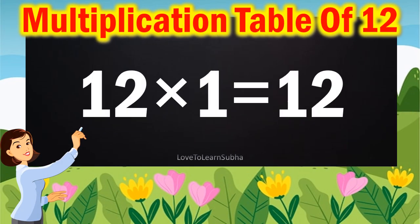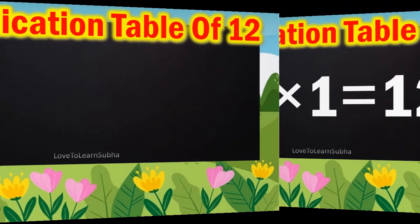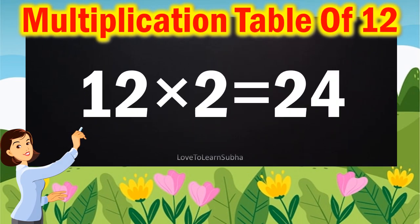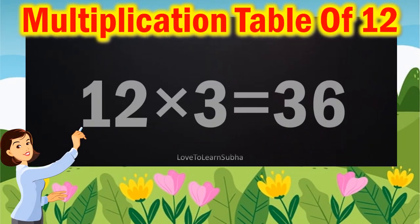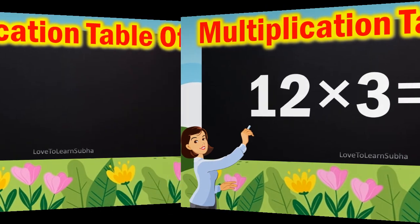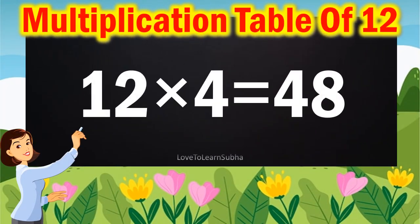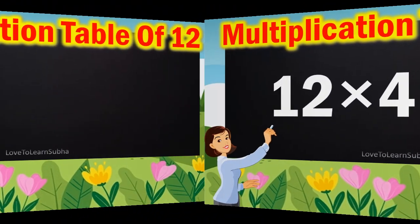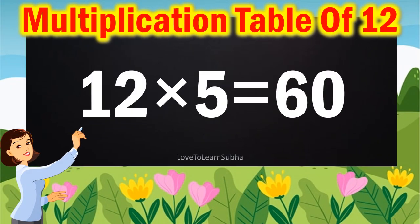12 1s are 12. 12 2s are 24. 12 3s are 36. 12 4s are 48. 12 5s are 60.